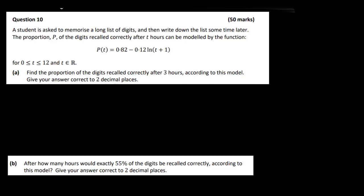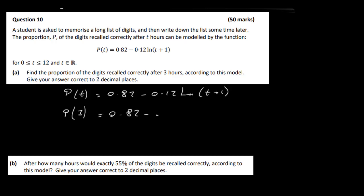Give your answer correct to two decimal places. Our formula is p(t) = 0.82 − 0.12 log(t + 1). So we've got to do p(3): it's 0.82 − 0.12 log(3 + 1). That's just calculator work — stick it into your calculator. To two decimal places, the answer is 0.65. So they can recall 65% of the digits they memorized initially.